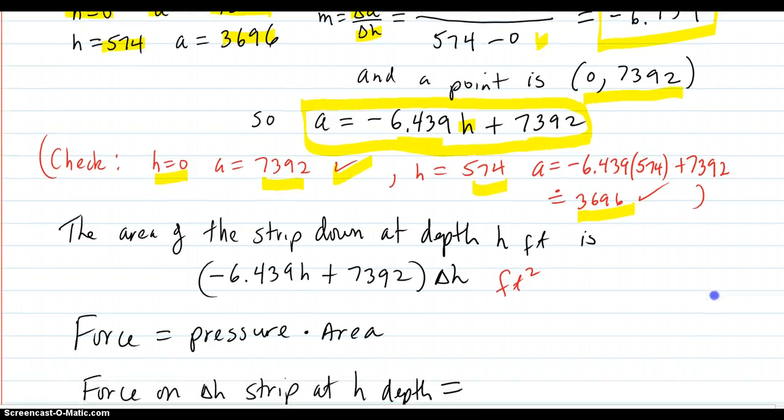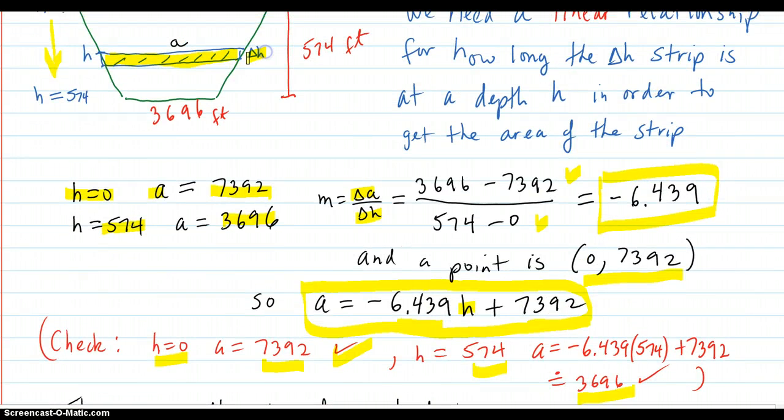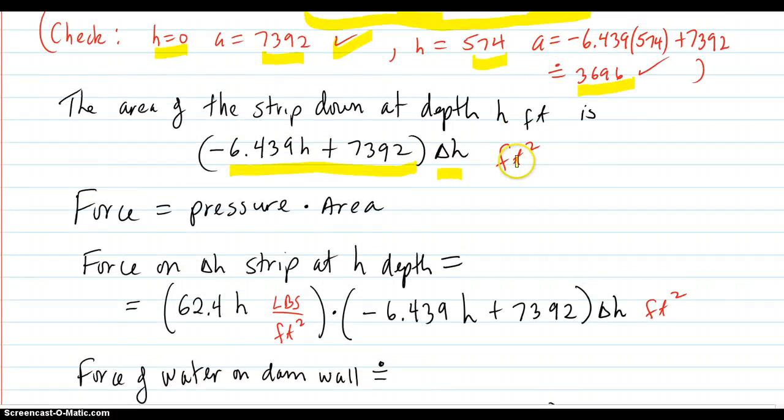So the area of the strip down at the depth of h feet is the length across times the delta h. See, it's delta h thick and a across. So that's there. That's the area strip. So force is pressure times area.